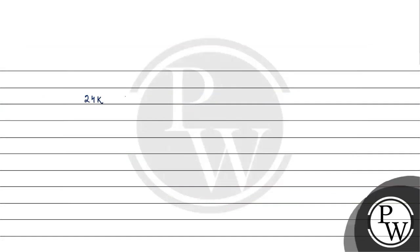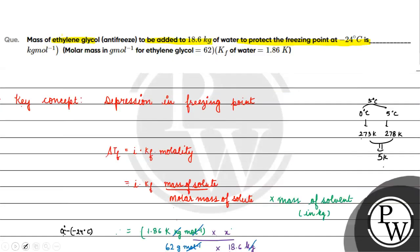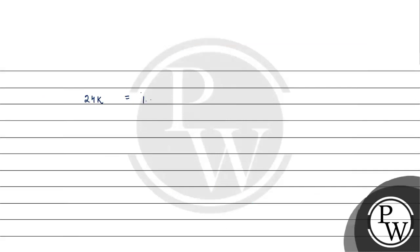24 Kelvin equals 1.86 Kelvin into x by 18.6 into 62. So x equals 24 into 18.6 into 62 divided by 1.86.